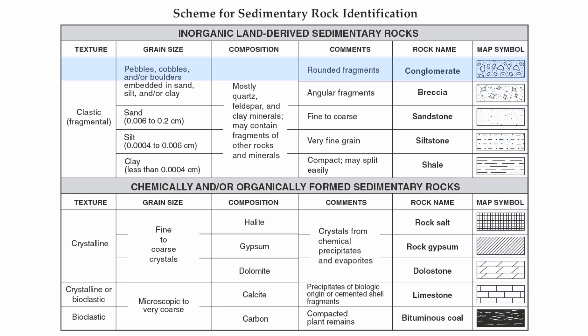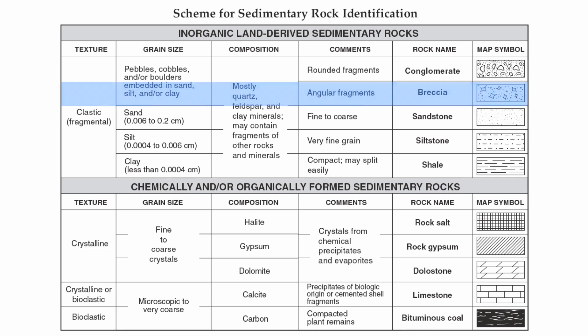Conglomerate is a clastic rock with a multitude of particle sizes glued together. The key thing about conglomerate is that the particles are rounded, which indicates those fragments have been traveling for a long amount of time. Compare that with breccia — the same basic type of rock as conglomerate — except the particles are angled, which means those particles have not traveled a very large distance.